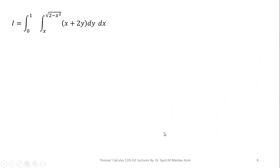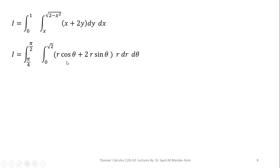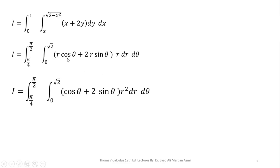Next, we will convert our Cartesian integral into a polar integral. We replace x with r cos theta, y with r sin theta, and dy dx with r dr d-theta. The limits of R are 0 to square root of 2, and the limits of theta are pi/4 to pi/2. Making simplifications, we take r common, so r times r becomes r squared. With respect to r, the term cos theta plus 2 sin theta is constant, and we apply integration to r squared.